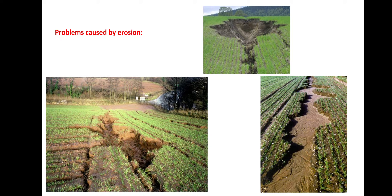Problems caused by erosion include damage to sea coasts and formation of sand dunes, disease and public health hazards, expenditure of money on water purification works, siltation of irrigation canals, rivers and reservoirs, problems in crop irrigation, and the consequent need for water conservation.